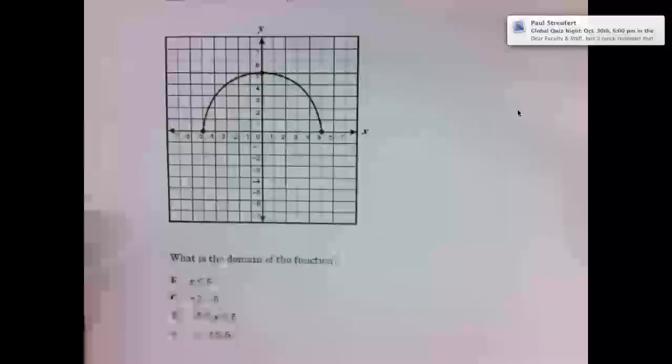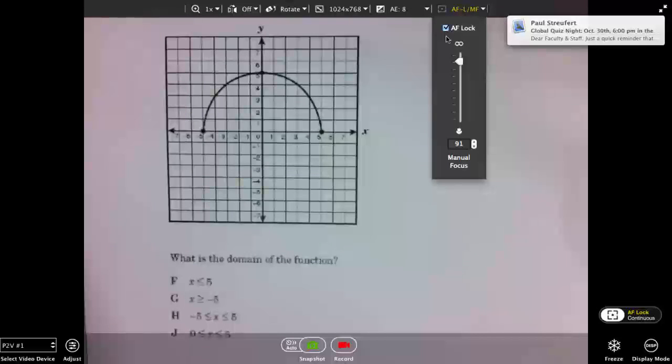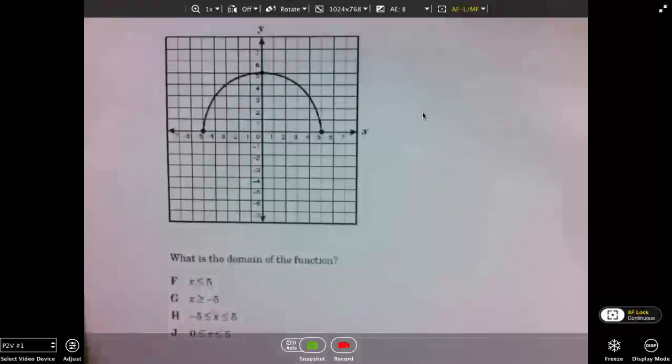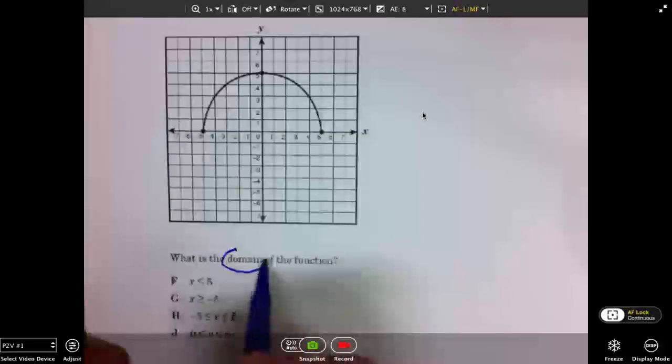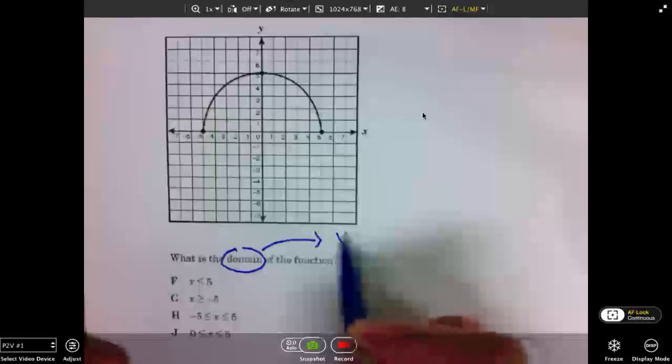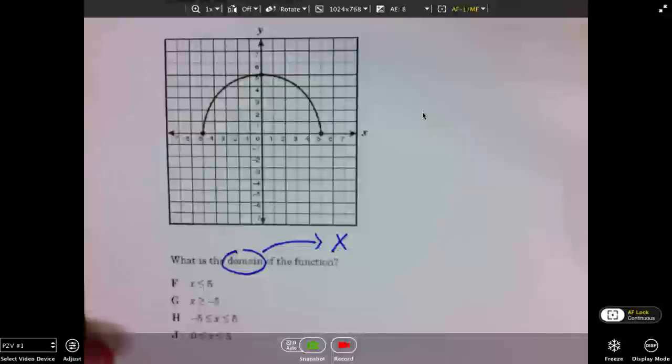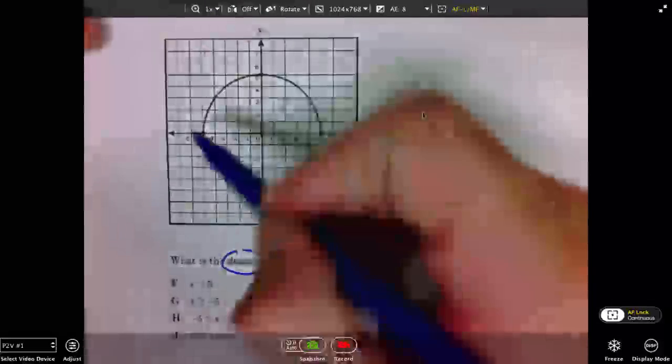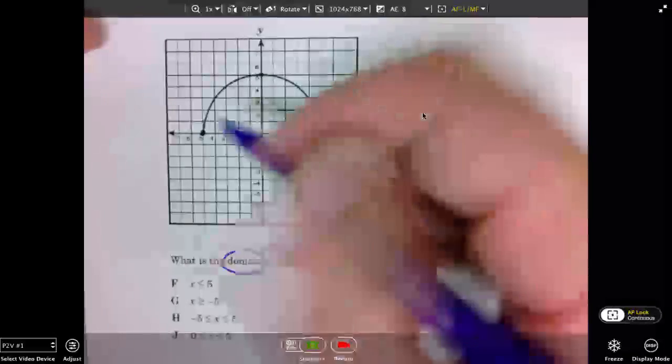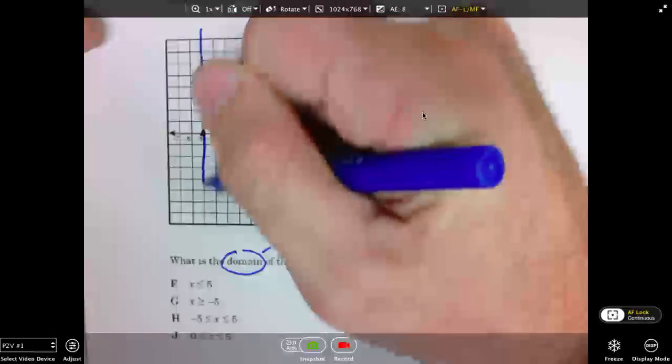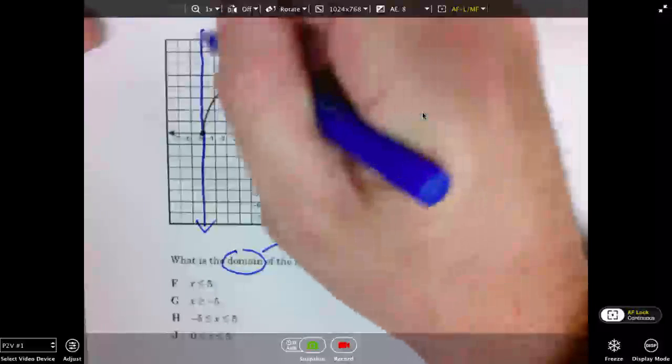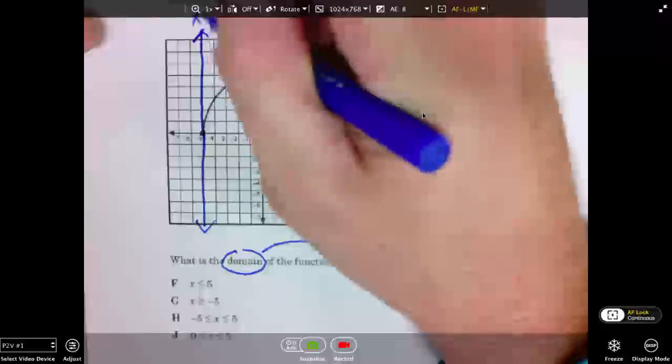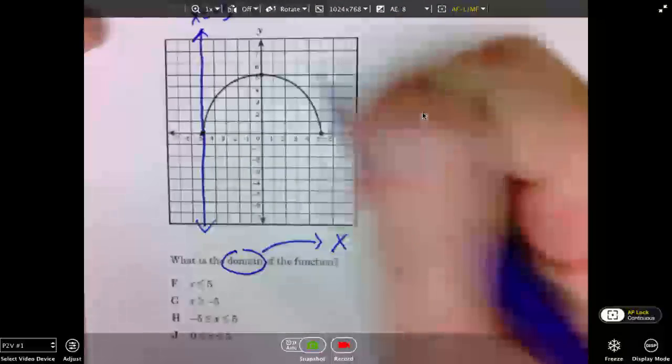Number two. Again, it asks, what is the domain? We know the domain is the X values. So again, we will consider the left and the right bound of the graph. This time we have a colored end point. The left bound is negative 5. All X values on this line are negative 5.